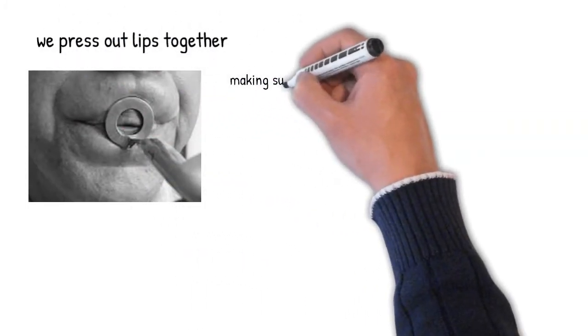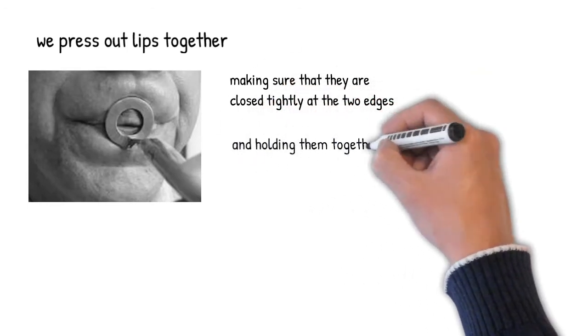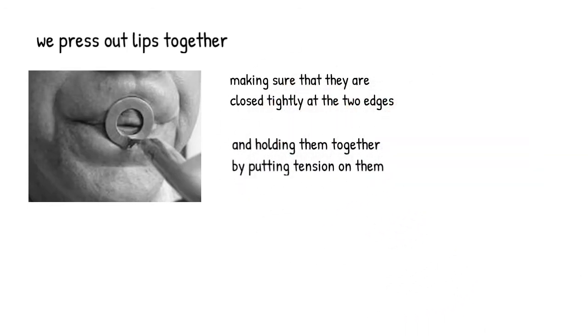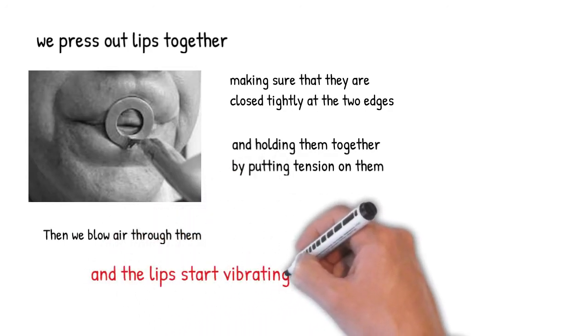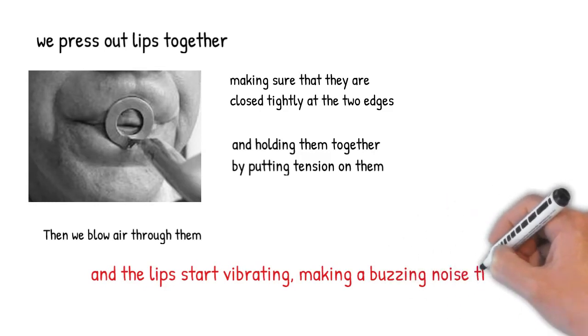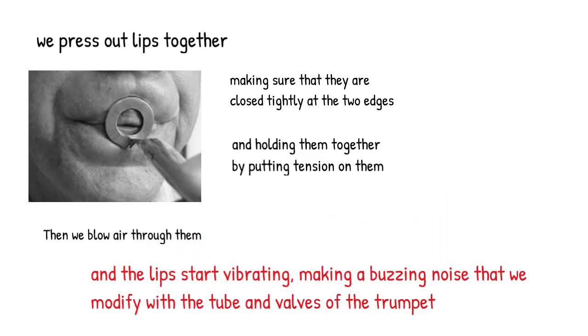Lip buzzing works like this. First, we press our lips together. We make sure that they're closed tightly at the edges. We put tension on them to hold them together, and then we blow air through them with a lot of pressure. This makes the lips vibrate, which gives us the buzzing noise that we subsequently modify with the tube and valves of the trumpet.